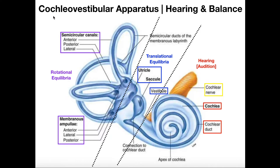Another term for this that you might see is the cochleo-vestibular apparatus. Cochlea refers to the fact that it contains something called the cochlea — the organ of hearing — shown here on the right side. The vestibular apparatus is pretty much everything else. This dotted line divides the cochlear part from the vestibular apparatus half of it.